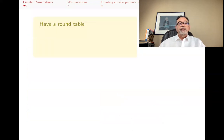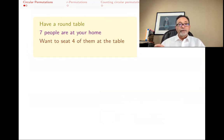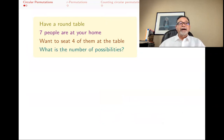Let's start with a motivating problem. Let's say you have a round table, a circular table, and you've got seven people at your home as guests. What you want to do is seat four of them at the table — three of them you're going to ignore. You're going to pick four of them and seat them, and you want to know how many different ways you can do that.